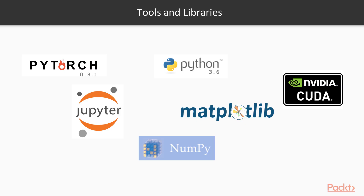Tools and libraries. These are the major tools and libraries we'll be using. Of course, we will need PyTorch, which we will use as the deep learning framework of choice — we'll be using version 0.3.1. All our code will be in Python 3.6. We'll be extensively using Jupyter Notebook as our environment to write and execute the code. Matplotlib and NumPy will be used as and when needed. If you have access to a GPU-based machine, we will need CUDA as well to enable GPU computation. I highly recommend that you use a GPU since some of the computation can take a really long time to finish on a CPU. Check out Google Colab, which gives you free GPU access.